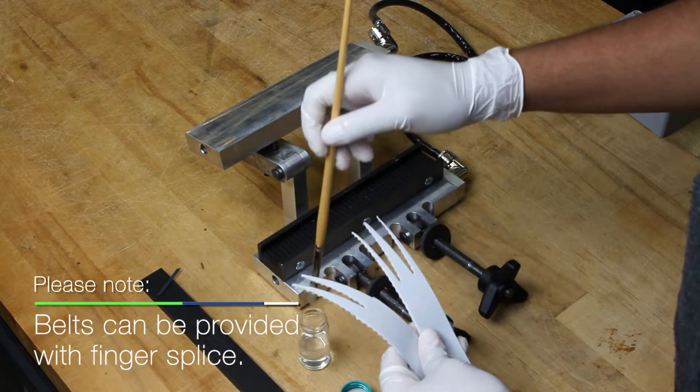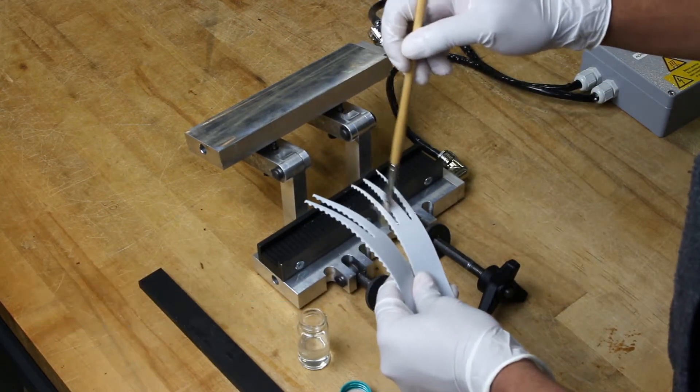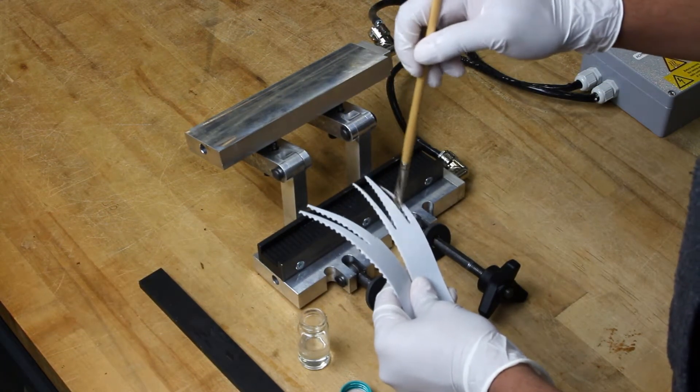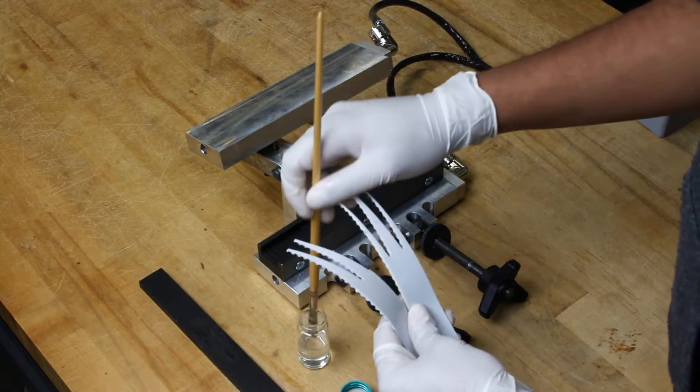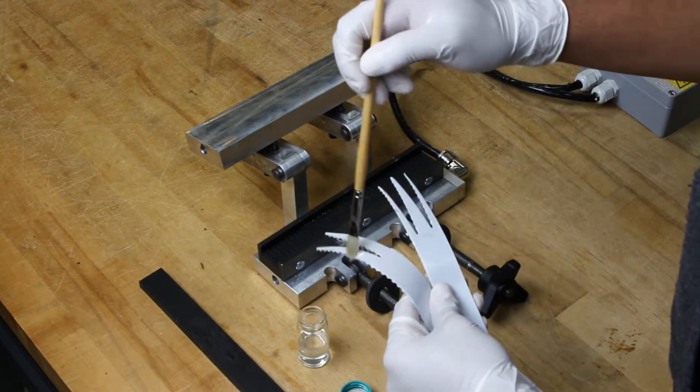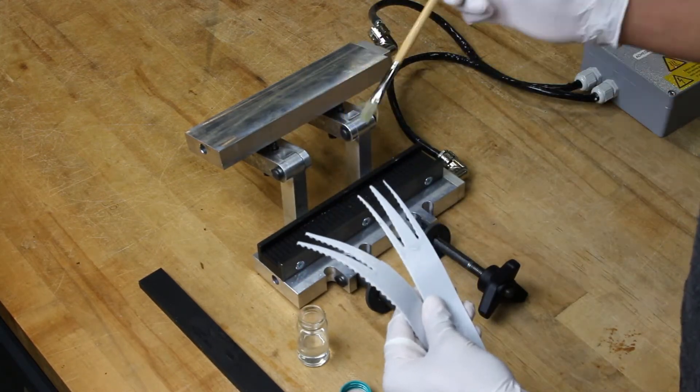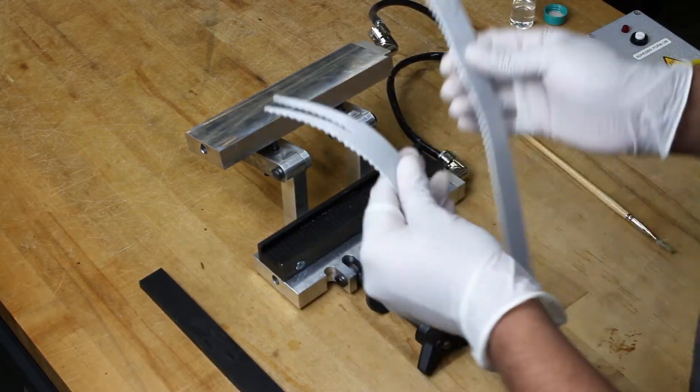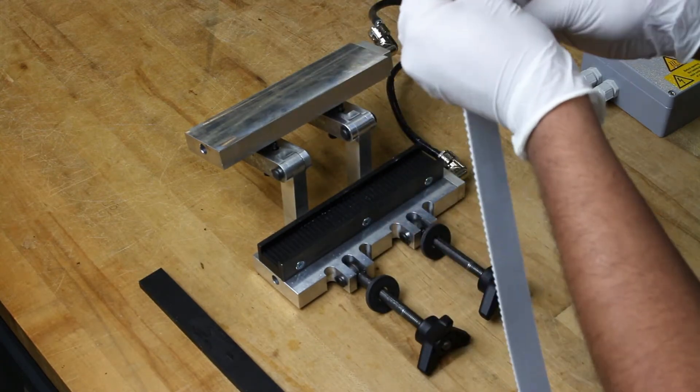Thoroughly coat the fingers on both ends of the belt with the perlodone as shown here. Be sure to get in between the teeth, underneath the teeth, and on top of the teeth on both sides of the belt, as the perlodone is the primary agent that causes the belt to bond. Any surface that is not covered in perlodone will not bond and you will be left with an incomplete weld.